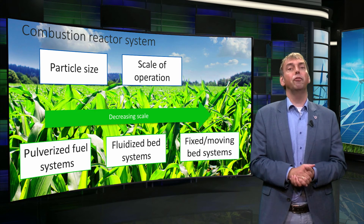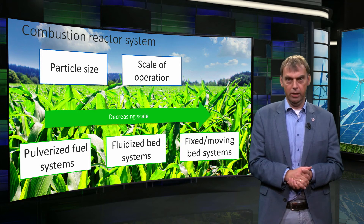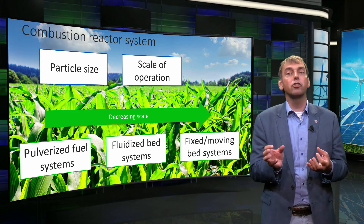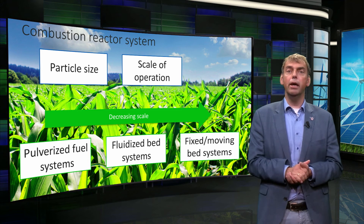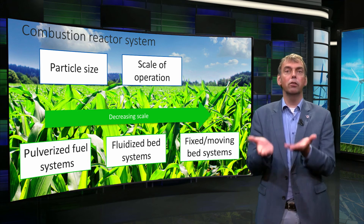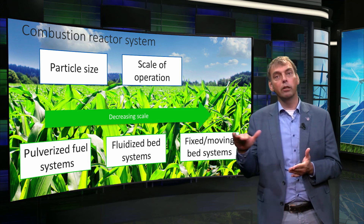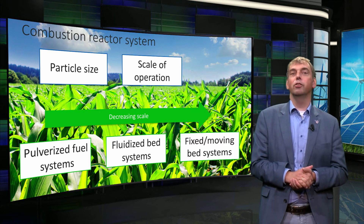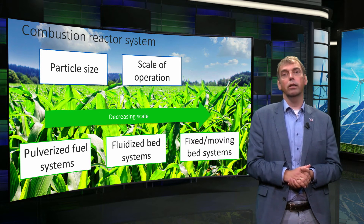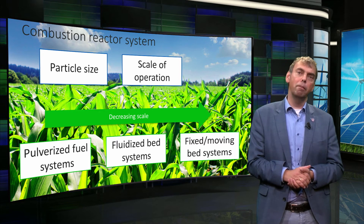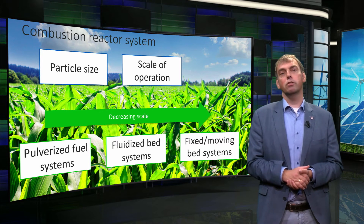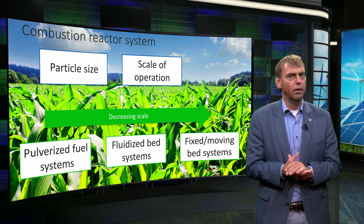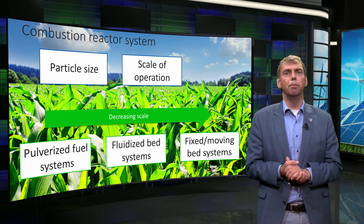Finally, we have the class of fixed bed or moving bed reactors. Herein, particles that can be large are combusted. Air is usually distributed through a bottom that can be moving, like a traveling grate. These systems are also used for waste incineration, which is well established. Typical temperatures are also above 1000 degrees Celsius. Residence time of the particles is higher than in the previously mentioned systems.